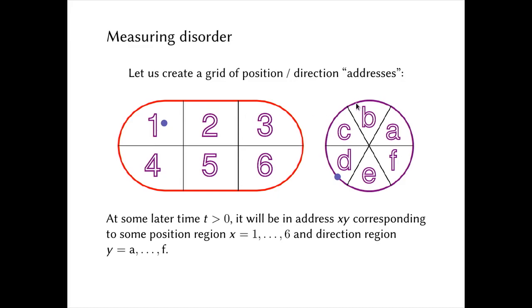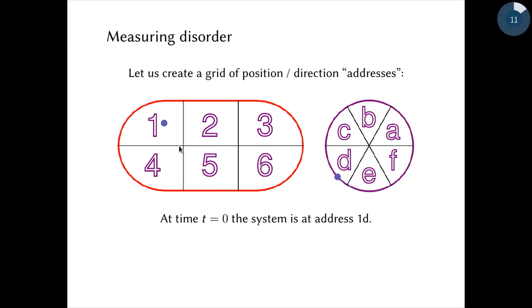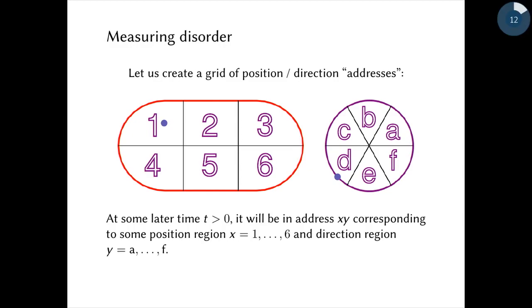To do that, we add one more element to the game: we create a grid of addresses. Think of this almost like regions on a map — demarcating longitude and latitude — but here we have addresses denoting position on the left and direction on the right. I've divided everything into six sections for simplicity; I could do this into a million sections and the same concept still applies. At each time, the system is going to be at a particular address. For example, here the system at the initial time is in address 1d — region 1 position, direction region d. At some later time it's going to be in some address xy.